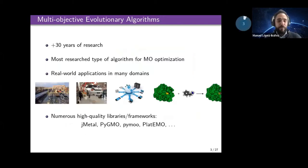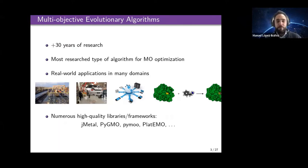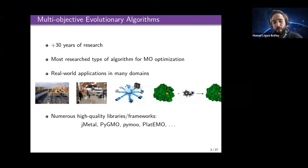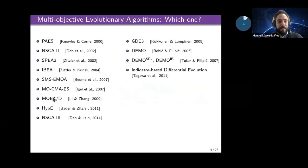We have many types of algorithms for solving optimization problems. One of these types is multi-objective evolutionary algorithms — algorithms that have been researched for more than three decades. They are probably the most researched type of algorithms for problems with multiple objectives. A large number of high-quality libraries and frameworks are available, like the Platypus library, which implements more than 100 such algorithms.